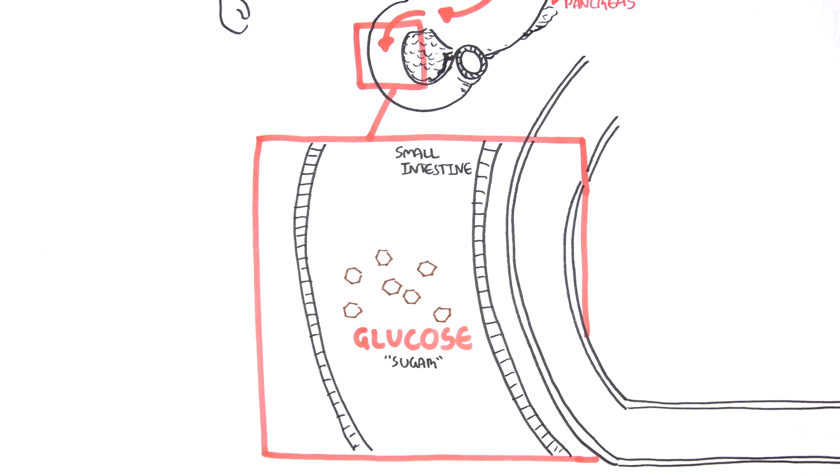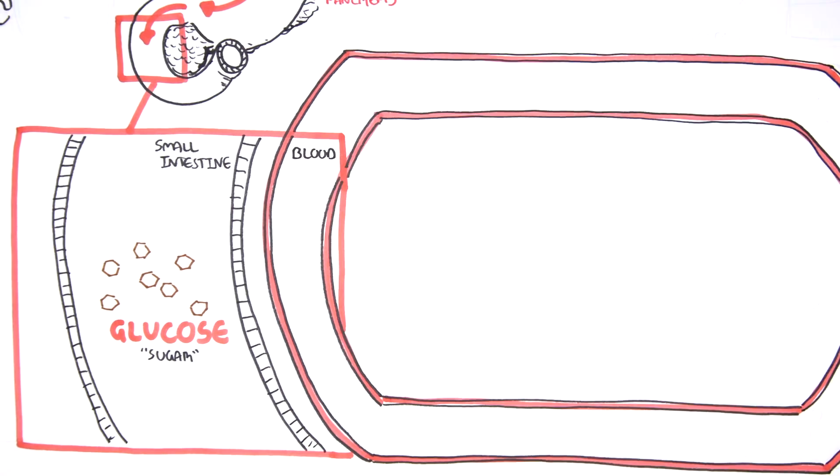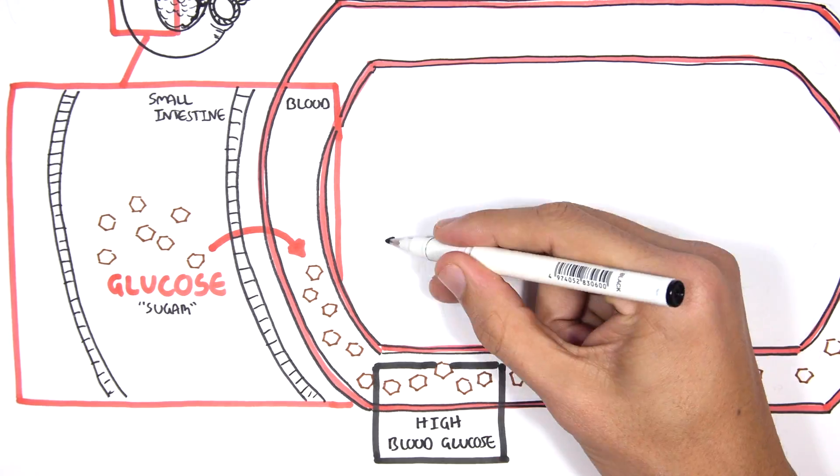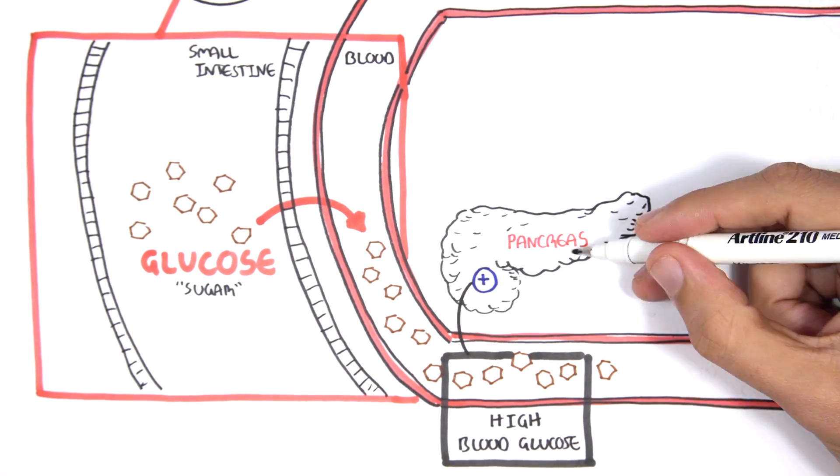Glucose is absorbed from the small intestine into your blood. As a result, we have high blood glucose levels. This will stimulate the pancreas to release the hormone insulin into the bloodstream.